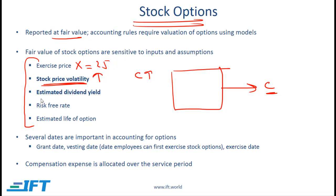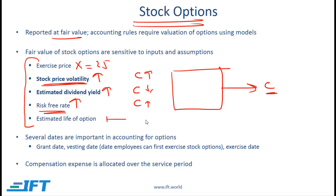The estimated dividend yield on the stock is another subjective variable. The higher this estimated dividend yield, the lower the value of the call option. The risk-free rate also has an impact on the call option price, though this is not a very strong relationship — if the risk-free rate is higher, the call option price is a little bit higher. Estimated life of the option: the longer the life, the higher the value of the call option. At this stage, just remember these relationships; you will understand them better when you do derivatives.